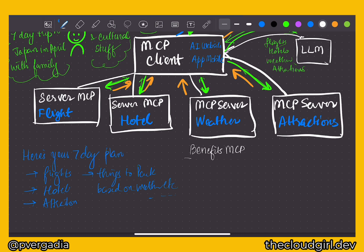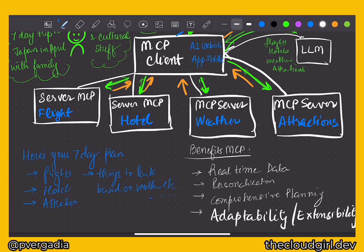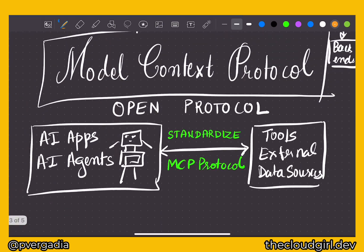One of the most important things to cover is the benefits of MCP. First and foremost, it provides real-time data and information in a standardized format — up-to-date flight information, hotel and weather-related details — and it helps personalize responses. The system can combine data from different sources and really cater to the user's question, enabling comprehensive planning without the user having to do it manually. Most importantly, MCP offers adaptability and extensibility: if you want to add restaurant reservations tomorrow, you can do that easily because of the standard protocol connecting client and server.